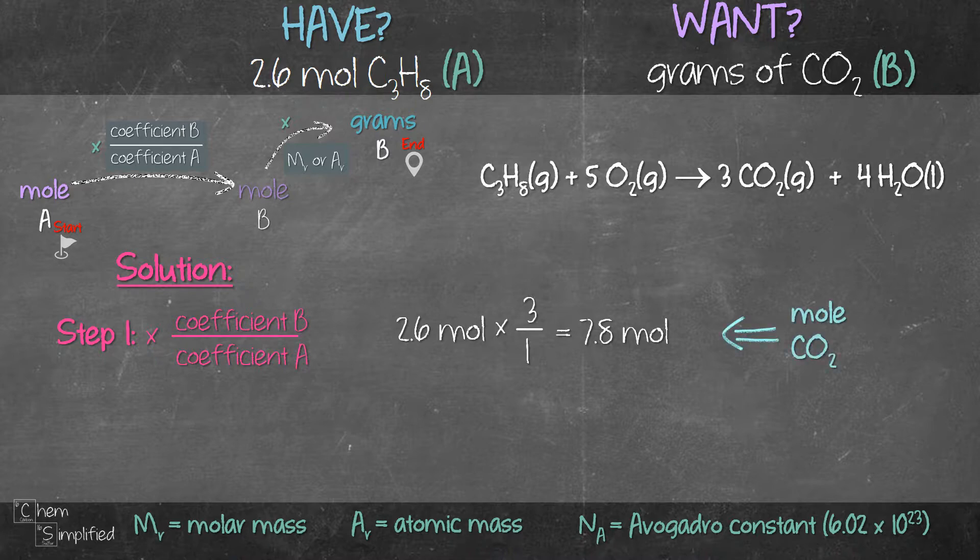And in our second and final step, we need to multiply what we got from step 1 with the molar mass of B. B is carbon dioxide, so the molar mass is 44.01 grams per mole.